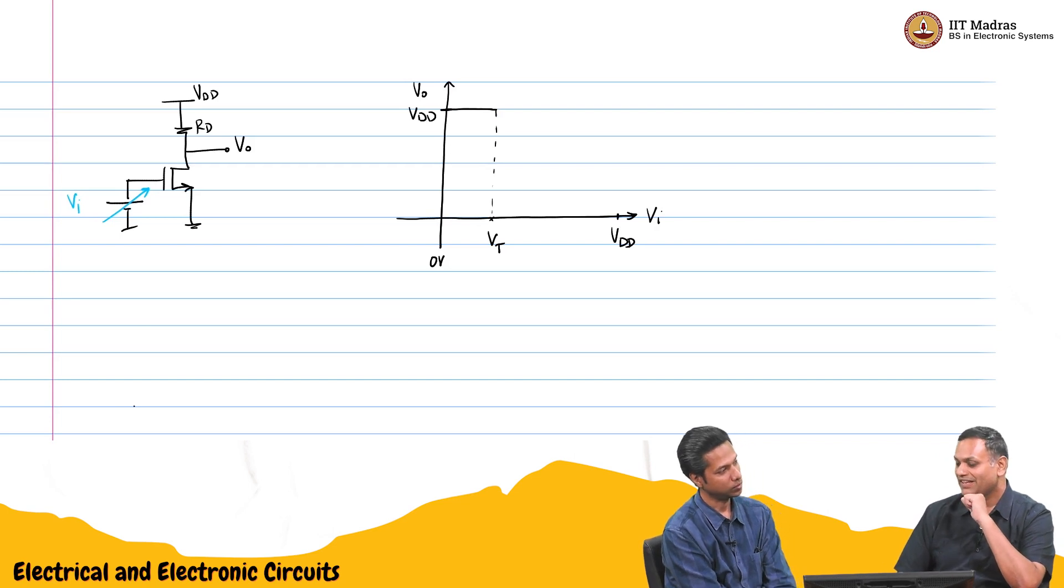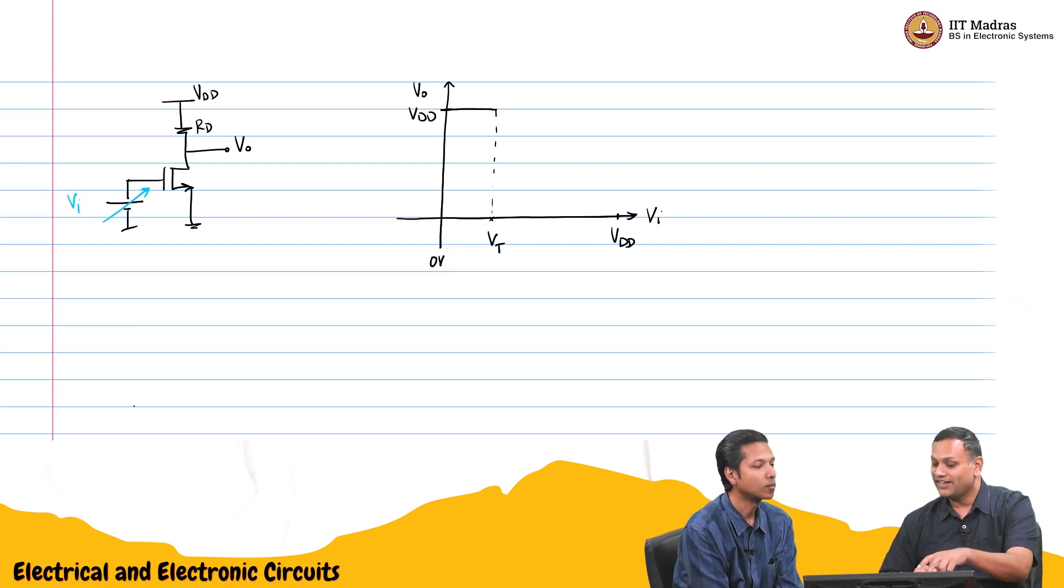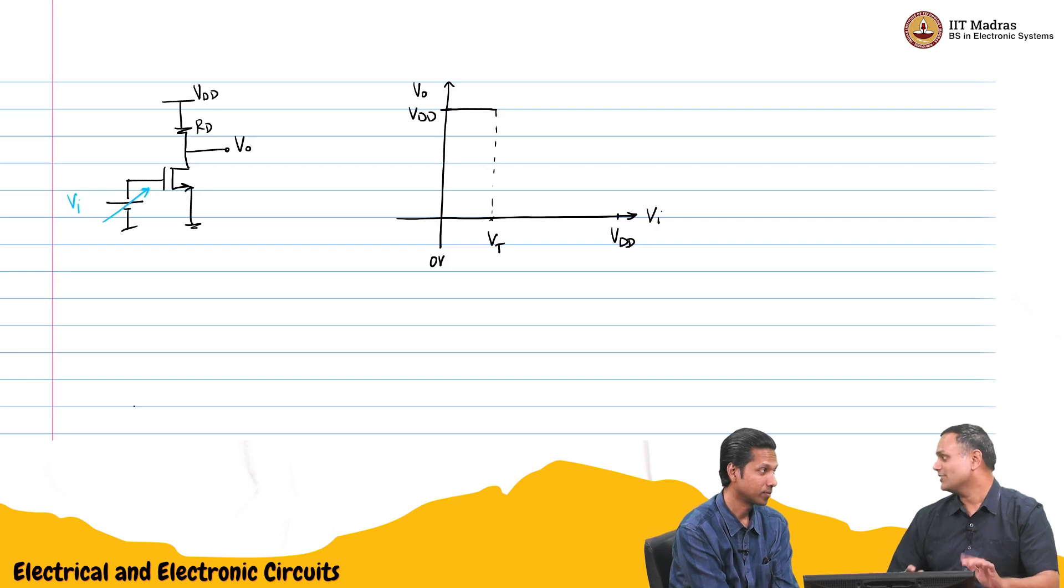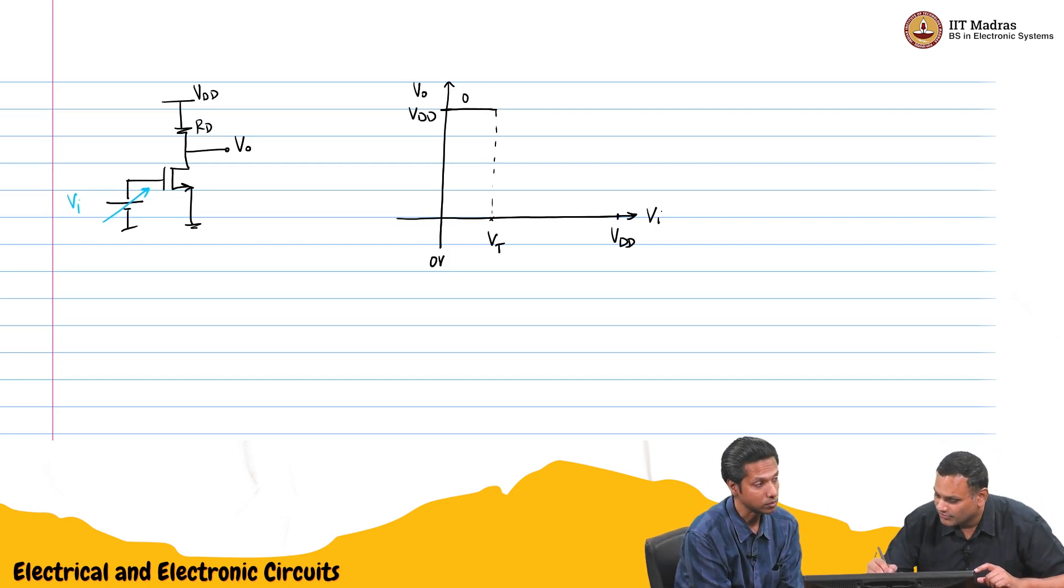And the minute the transistor starts conducting, will it go to triode region or saturation region? My feeling is the drain gate voltage is small. It is at Vt. And the drain voltage is at Vdd. Most probably saturation.